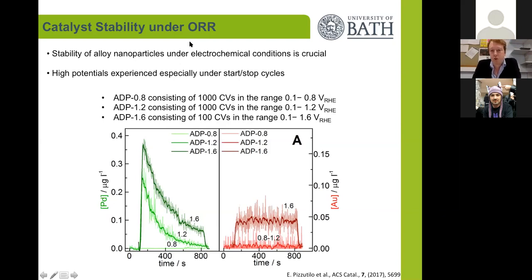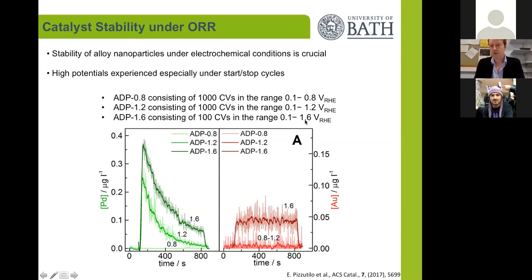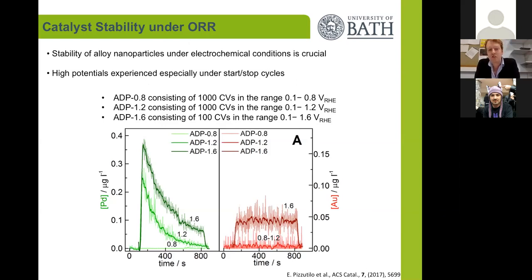The first protocol scans through the oxygen reduction onset, only up to around 0.8 V. The second goes to a more oxidizing condition, up to 1.2 V. The third goes up to a very oxidizing condition of 1.6 V. We linked up the electrochemical cell to an online ICP-MS to monitor the leaching of the catalyst in real time.